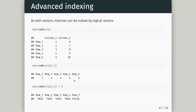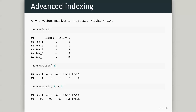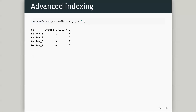Just like with vectors we can apply logical expressions to matrices. Here I subset my first column to get all the values and check which are less than five — it tells me true, true, true, true, false. I then get a logical vector from my matrix by asking which values in the first column are less than five, and use that logical vector to subset my whole matrix by row.